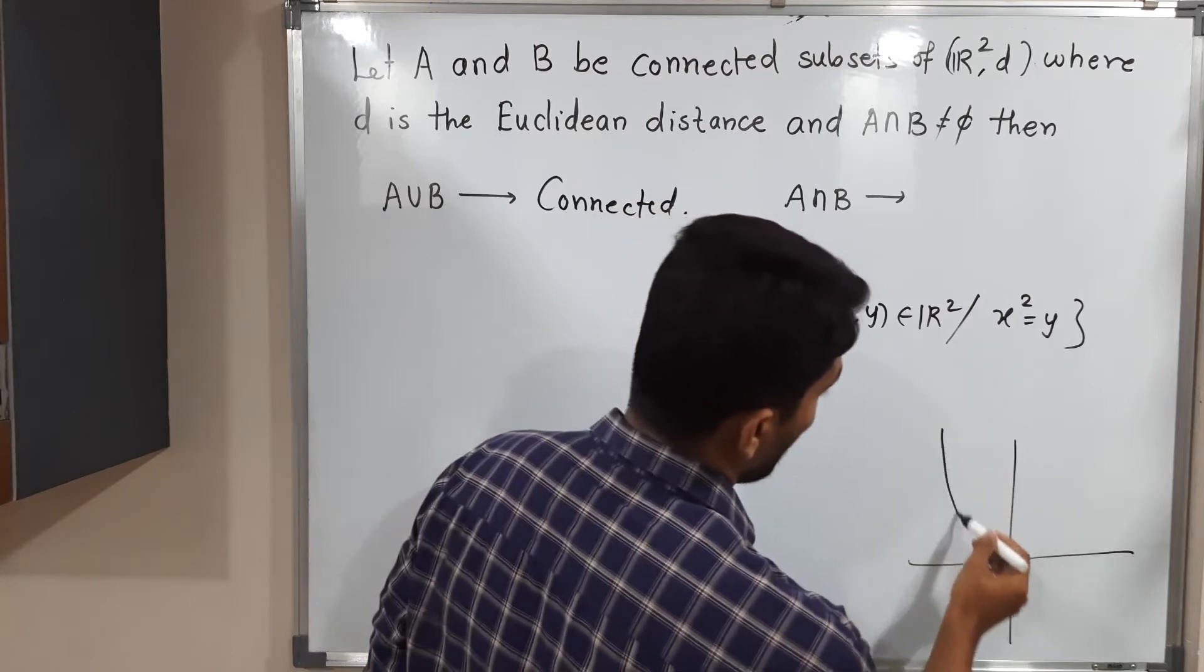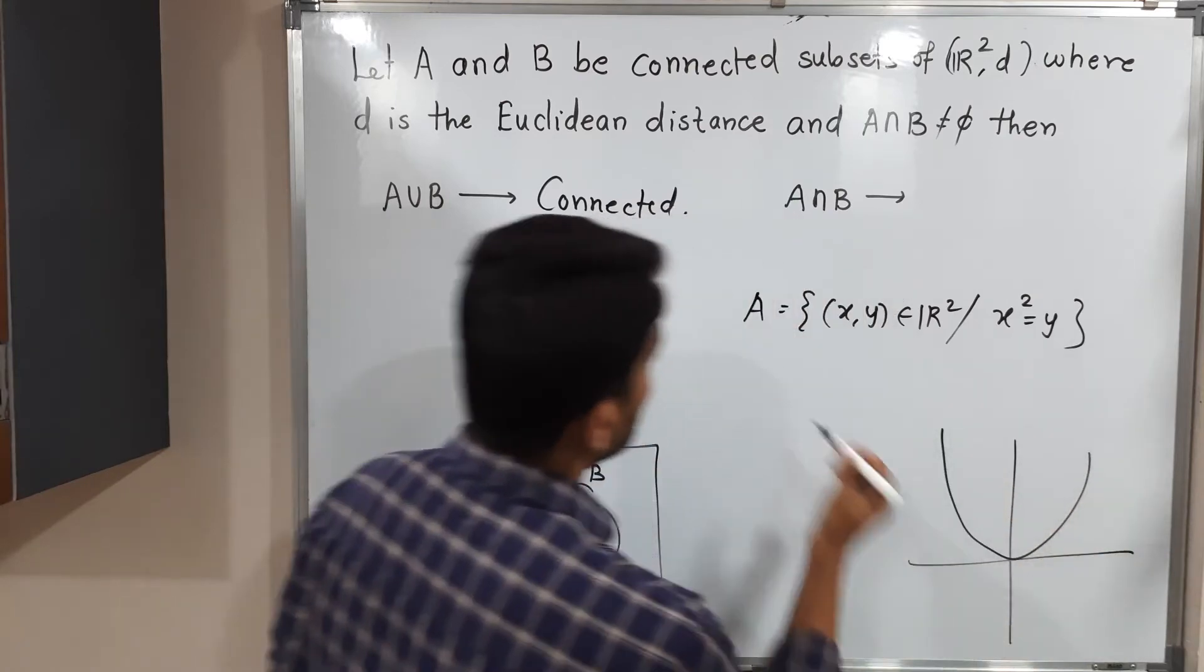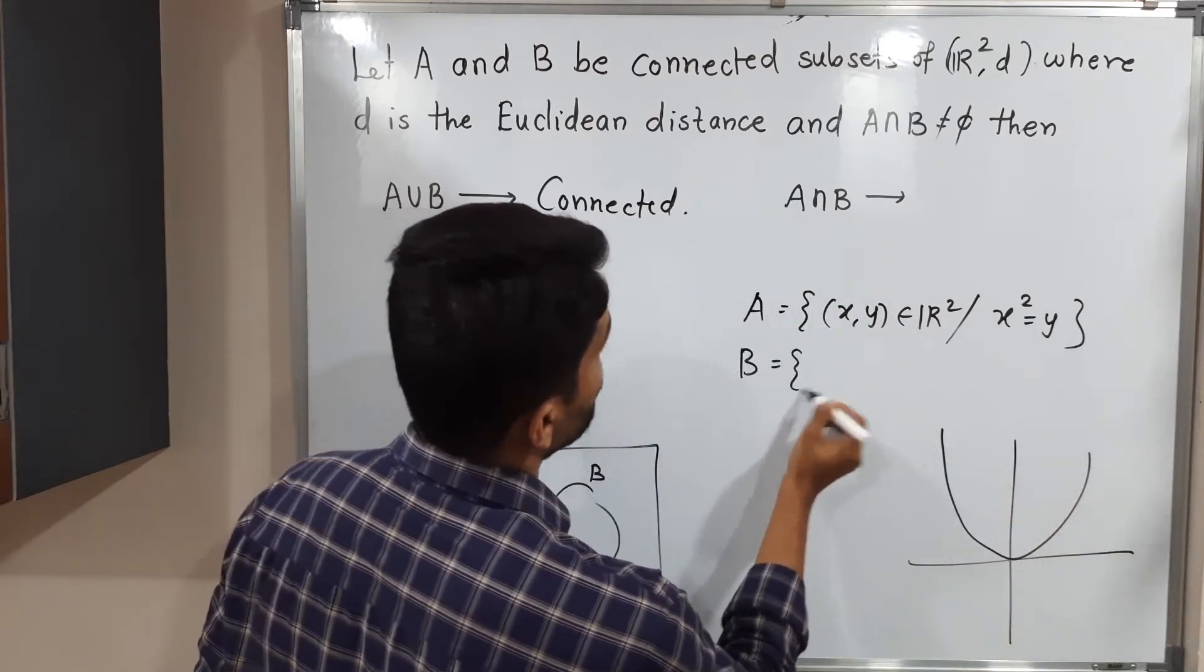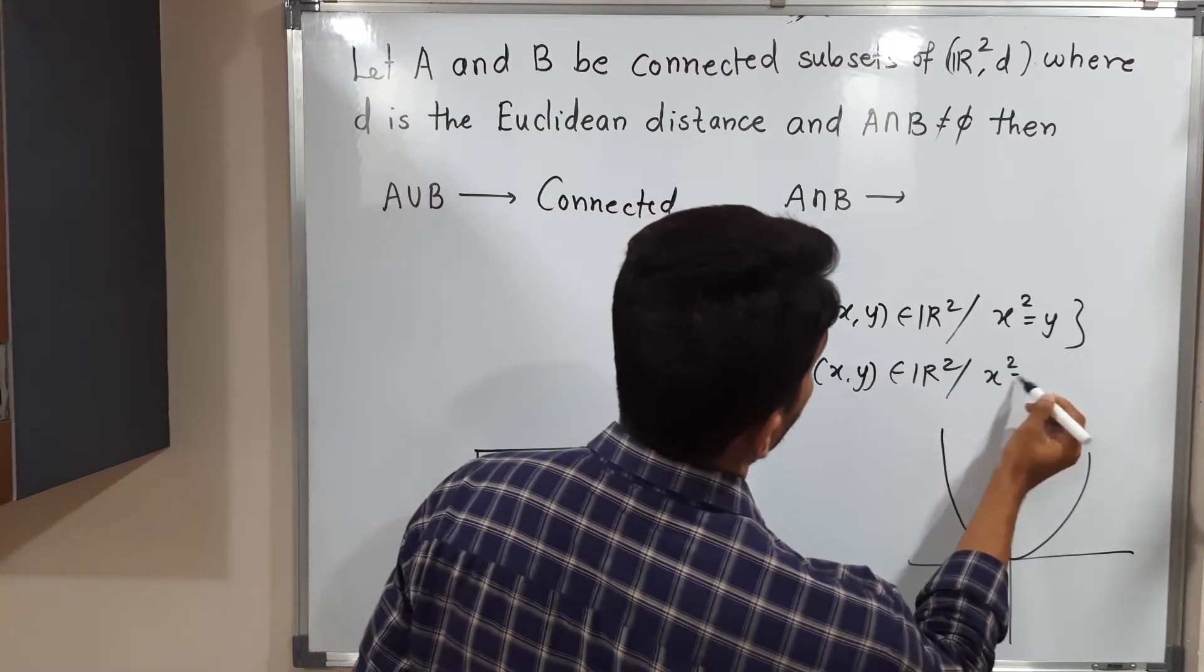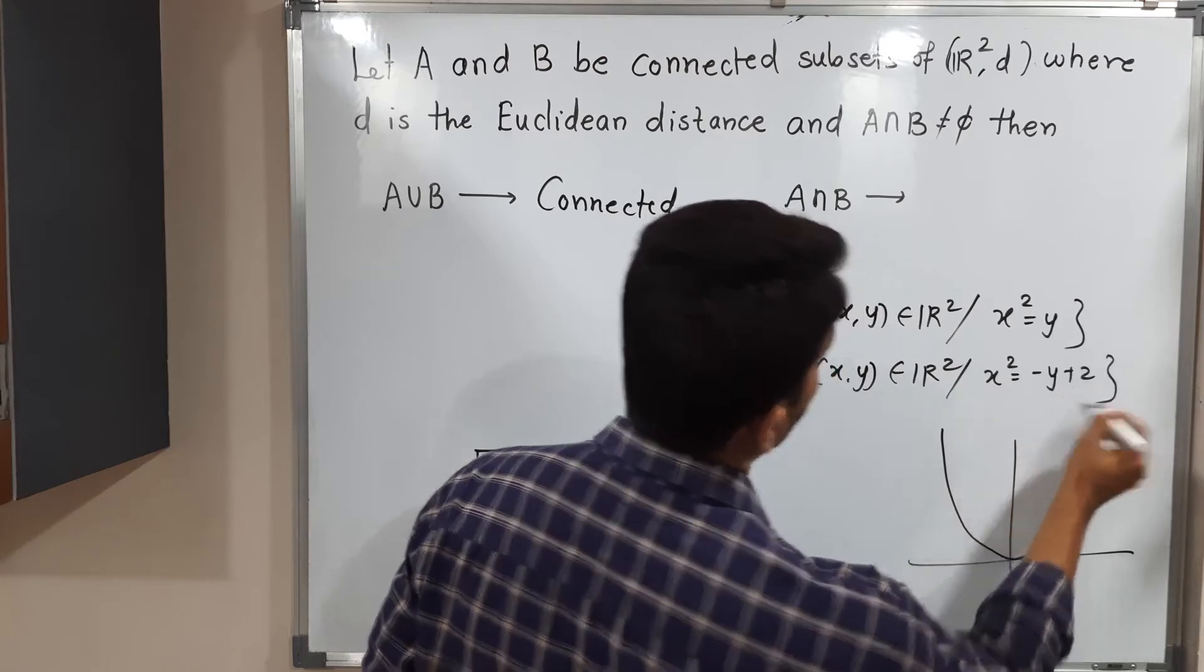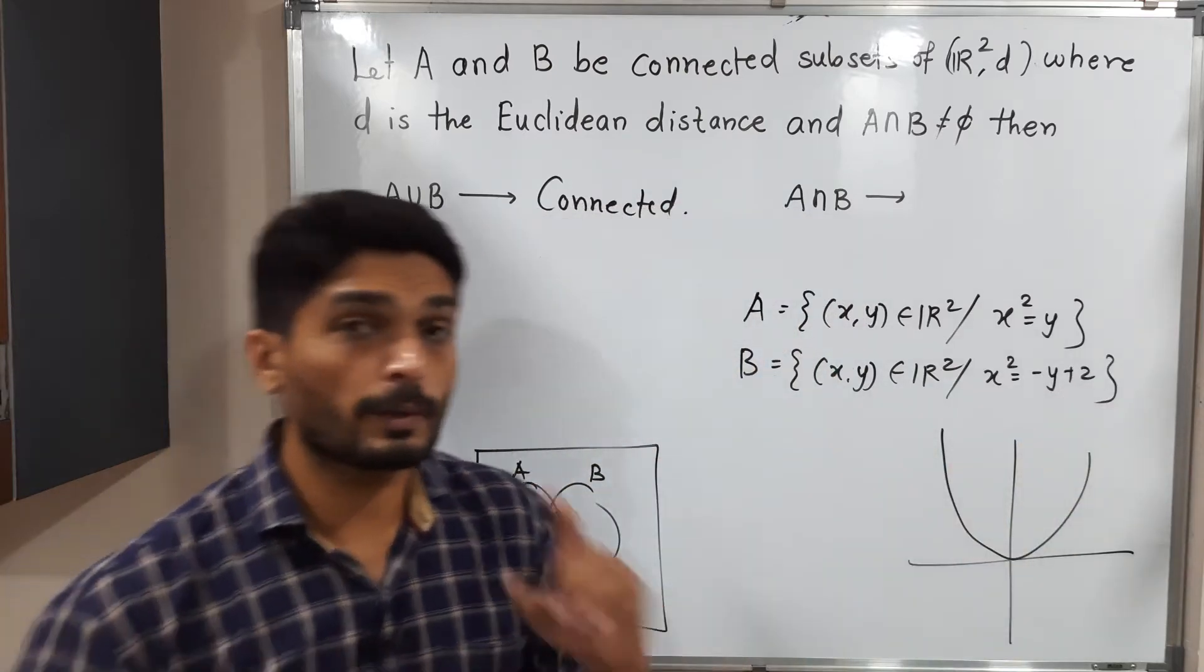That means the graph of that parabola will be like this. Now consider a set B which is defined as (x,y) belongs to R² such that x² = -y + 2.